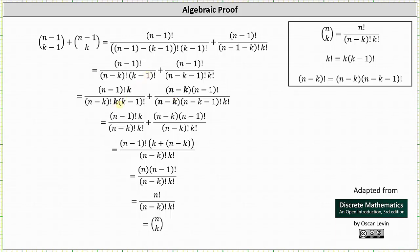By multiplying the first fraction by k over k, notice in the denominator we have k times k minus 1 factorial, which simplifies to k factorial. And for the second fraction, when we multiply the numerator and denominator by n minus k, we have the product of n minus k and n minus 1 factorial divided by the product of n minus k, n minus k minus 1 factorial and k factorial. But n minus k times n minus k minus 1 factorial simplifies to just n minus k factorial.